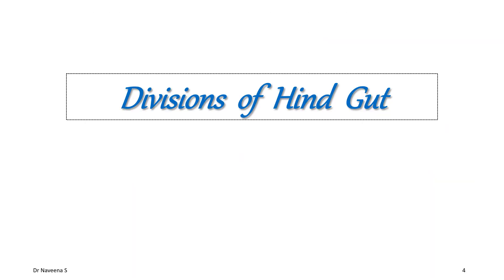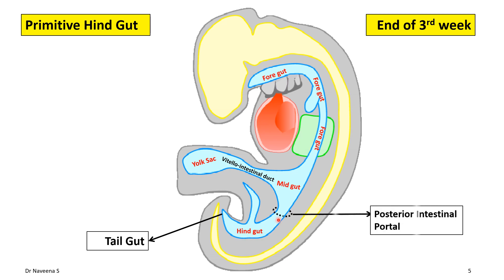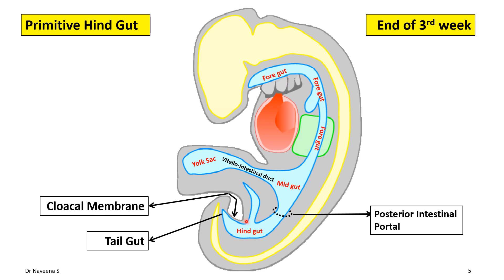Let us begin with the divisions of hindgut. Here is the primitive hindgut, seen in the tail fold of the embryo. The caudal-most portion of the hindgut is known as the tailgut, which in later stages regresses. The primitive hindgut extends between the posterior intestinal portal cranially and the cloacal membrane caudally, which is a bilaminar membrane formed by surface ectoderm and endoderm without intervening mesoderm. The ventral wall of primitive hindgut shows an endodermal outgrowth known as the allantoic diverticulum or allantois.